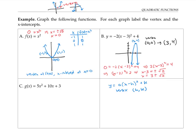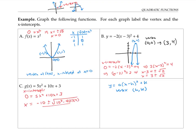This last example is trickier to graph because it's not in vertex form, so we can't just use transformations. One way to graph it would be to rewrite it in vertex form, but for now let's start by identifying the x-intercepts. If we set y = 0 and solve for x using the quadratic formula, we get x = [−10 ± √(10² − 4·5·3)] / (2·5), which simplifies to x = [−10 ± √40] / 10, or x = −1 ± √10/5.